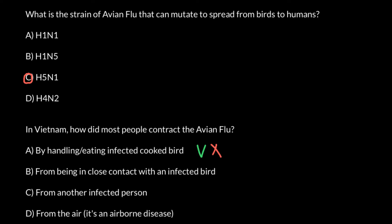Answer B: from being in close contact with an infected bird. This is the correct answer, because most of the infections that spread from birds to humans occurred through direct contact in villages where people live alongside these birds. Answer C: from another infected person — this can be considered an incorrect answer.